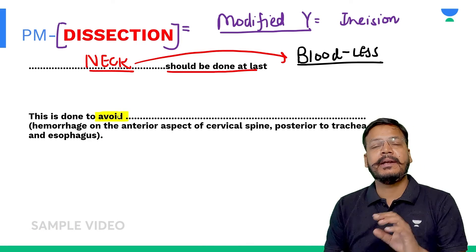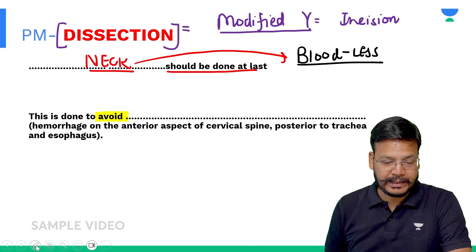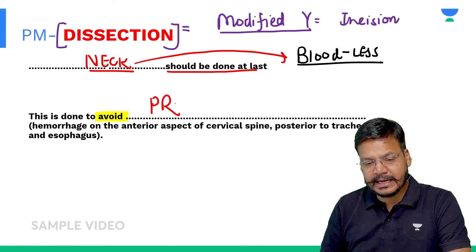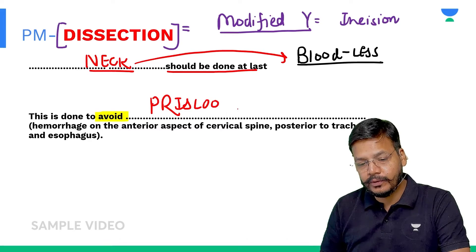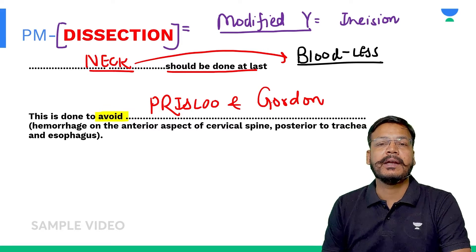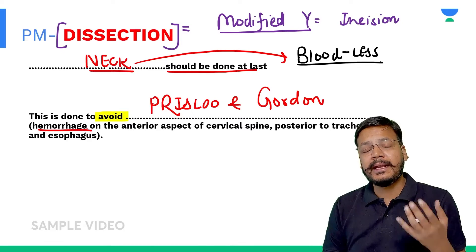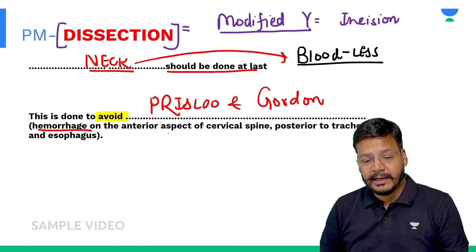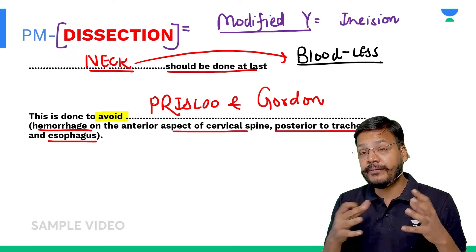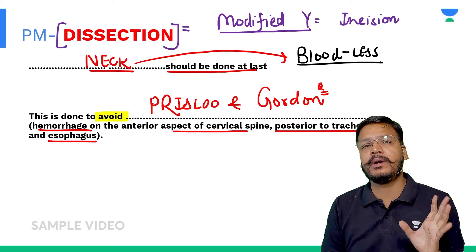We dissect the neck last because we want the neck as a bloodless field, and to avoid one artifact — the Prince Lou and Golden artifact. This artifact is hemorrhage in the neck: if we do not open the neck last, there will be hemorrhage in the anterior aspect of the cervical spine, posterior to the trachea and esophagus. To avoid the Prince Lou and Golden artifact, neck dissection must be done last.